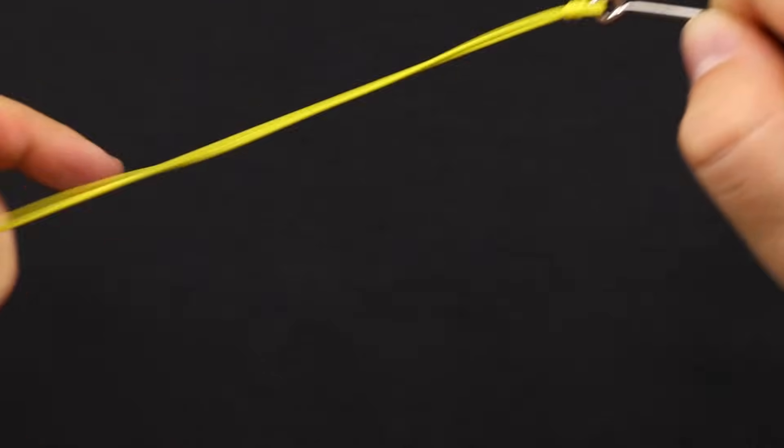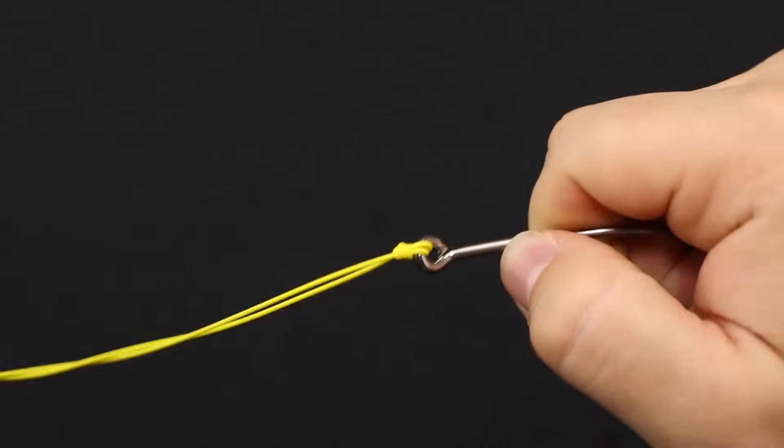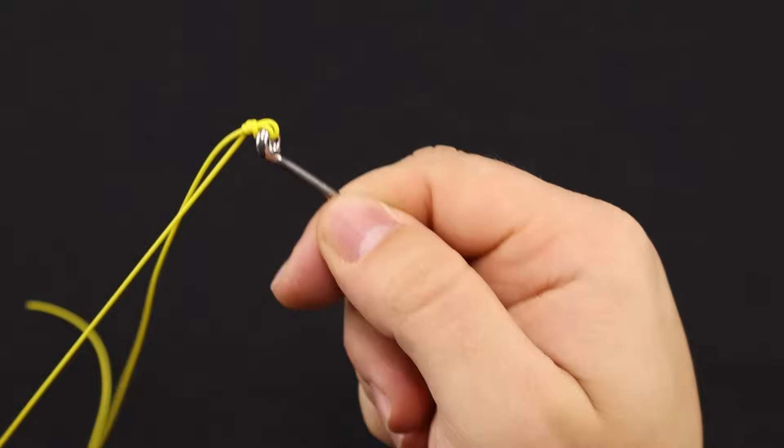I like to let go of the tag end and pull on your main line to really make sure that knot is set. And then go ahead and cut your tag end off.